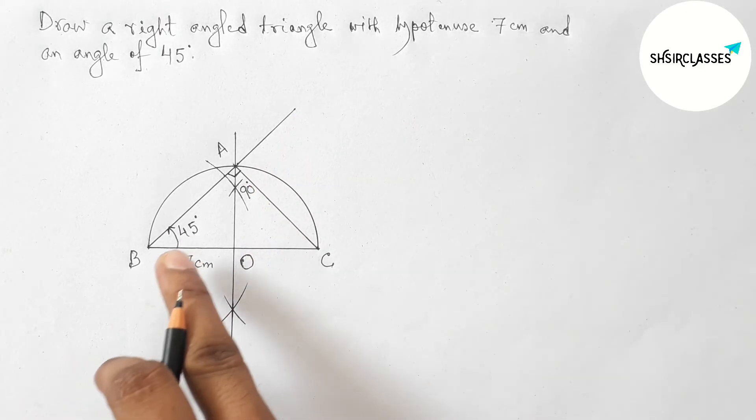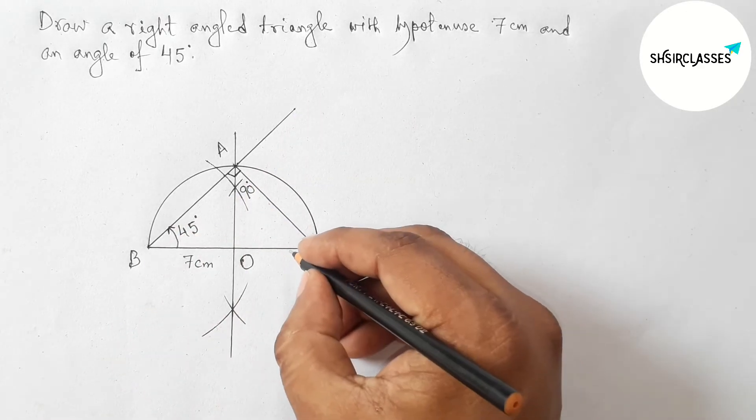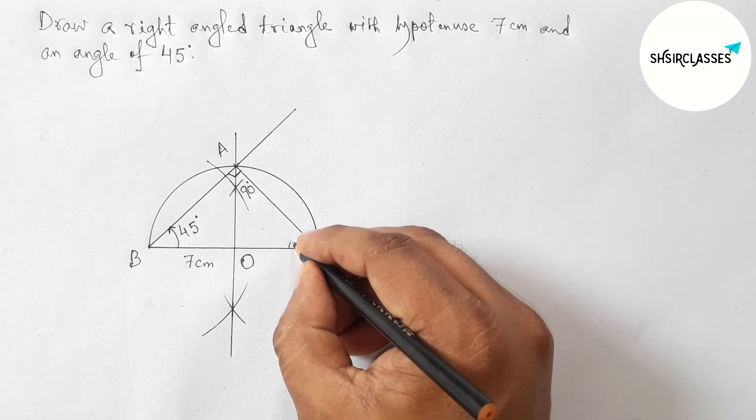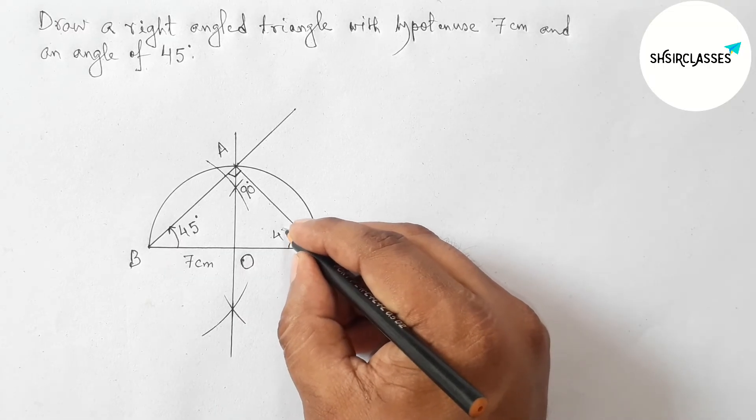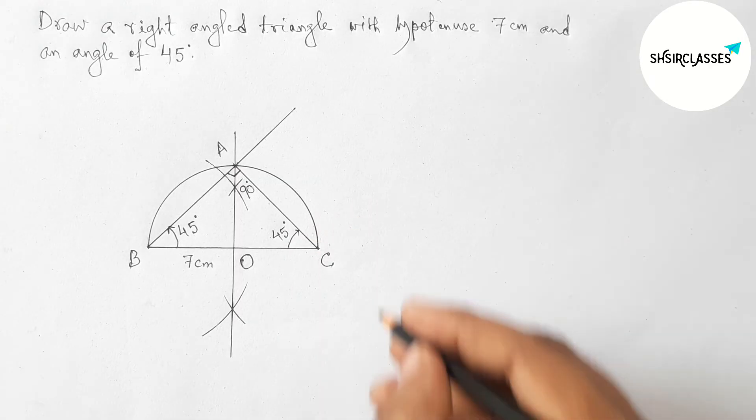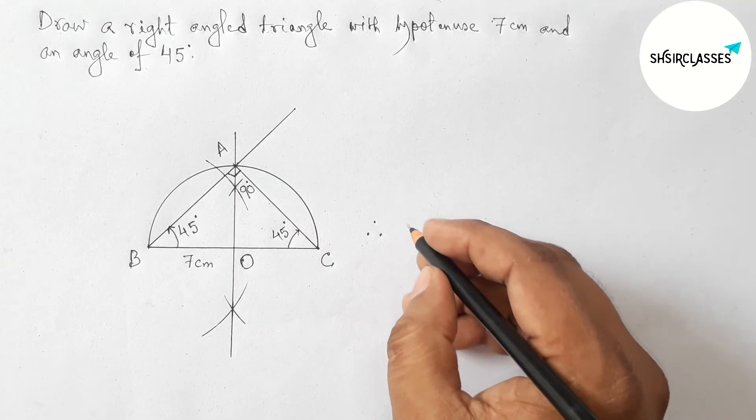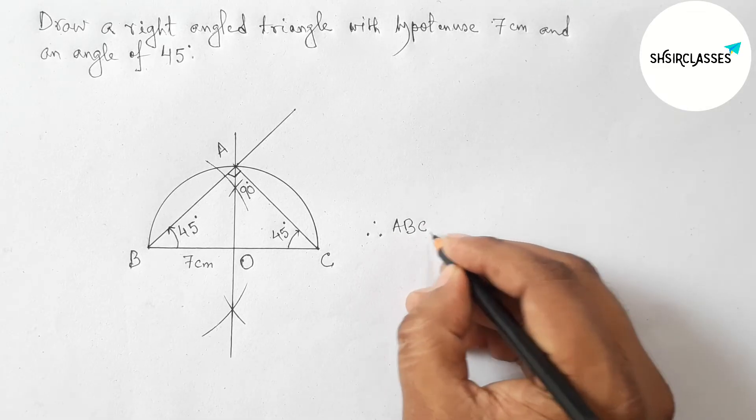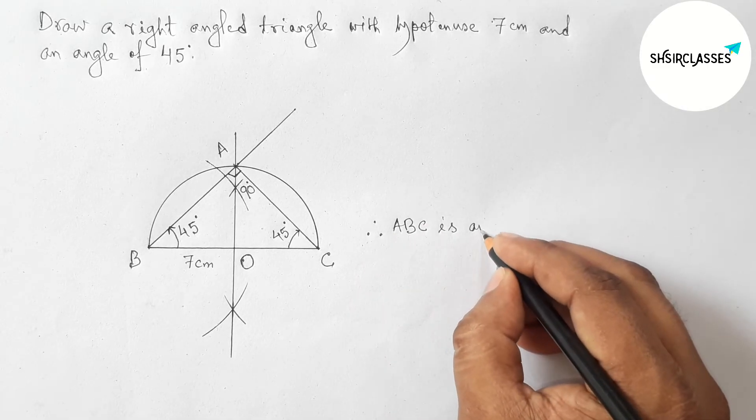Now two angles of this triangle are 90 and 45, so this is obviously 45 because the sum of three angles of a triangle is always 180. So from this picture we can see that ABC is an isosceles right angled triangle.